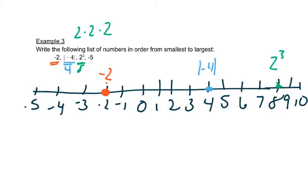And then this last one says negative five, which would be right here. So now we can just read our numbers in order from left to right because to the right is bigger, smallest to largest. So when we write it, we want to write how it was expressed in the original problem. So when we get to this next one, we're not going to write four, we're going to write the absolute value of negative four. And then the last one would be two to the third power.